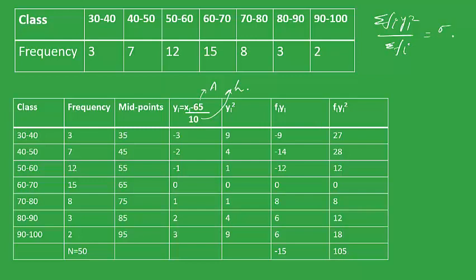Let's say this equals sigma y. This is sigma y square. So we will have sigma yi square equals 105 upon sigma fi, which gives us 2.1 equals sigma y square.